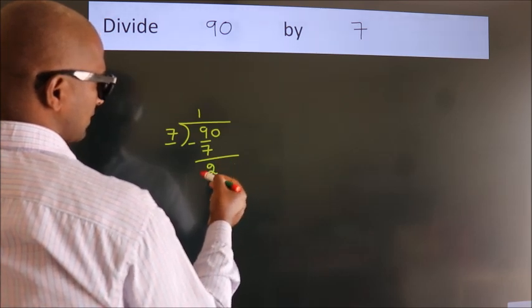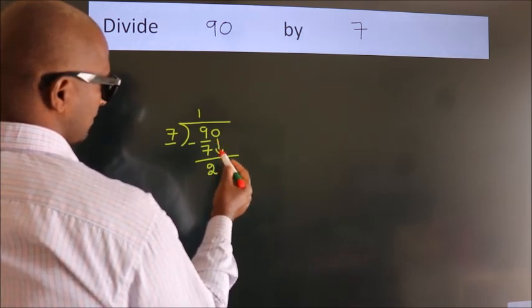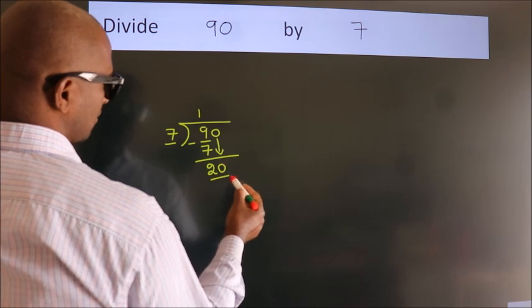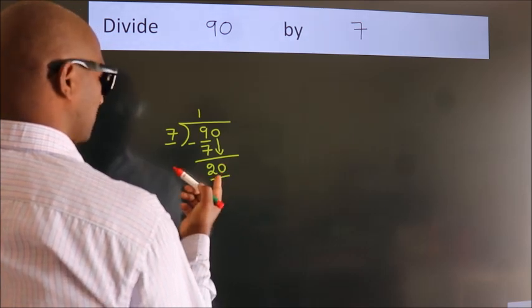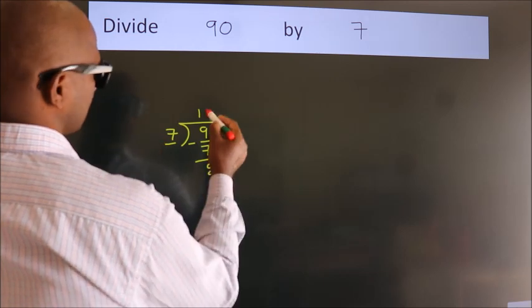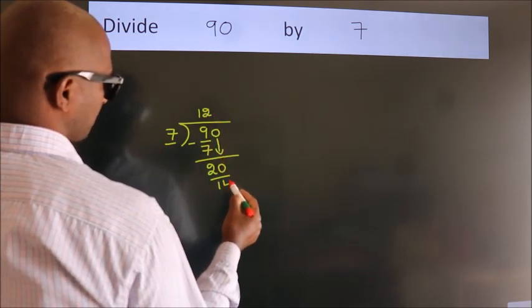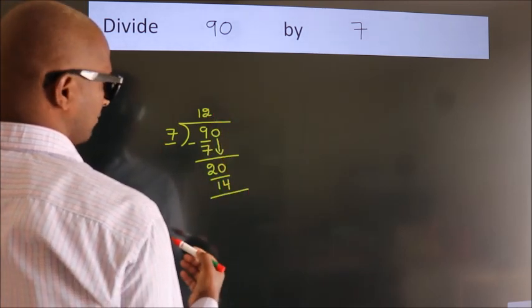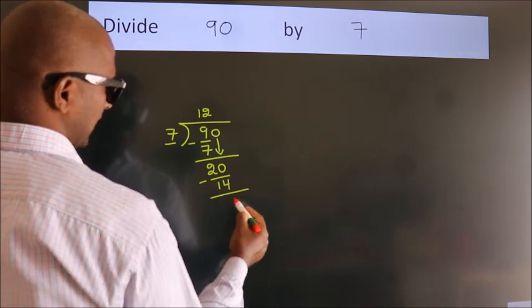After this, bring down the next number. So 0 comes down, making 20. A number close to 20 in the 7 table is 7 twos—14. Now we subtract. We get 6.